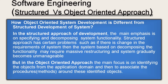What is the difference between the structured and object-oriented approach? In the structured approach, the main emphasis is on specifying and decomposing the system functionally. The structured approach has problems: if there is a change in requirements, the system based on decomposing functionality may require massive restructuring and gradually becomes unmanageable. In the object-oriented approach, the main focus is on identifying the objects from the application domain and then associating procedures or methods around these identified objects.